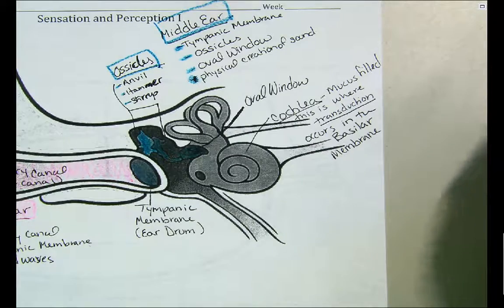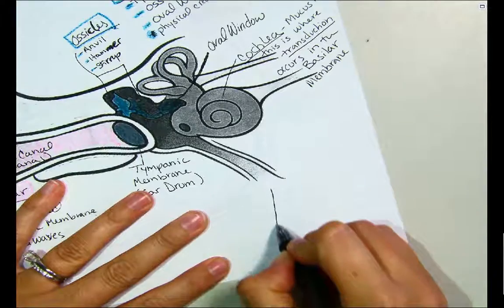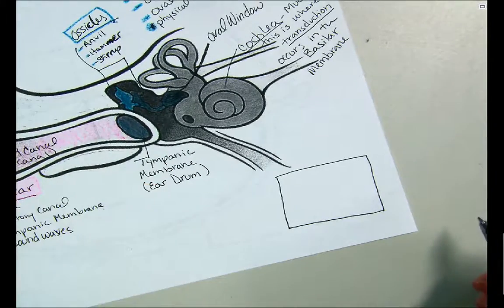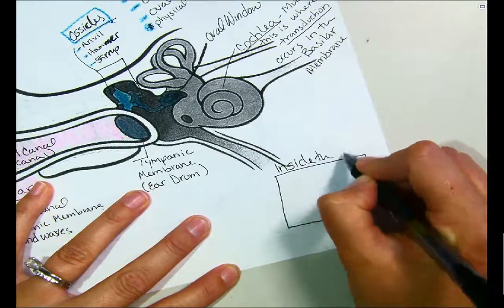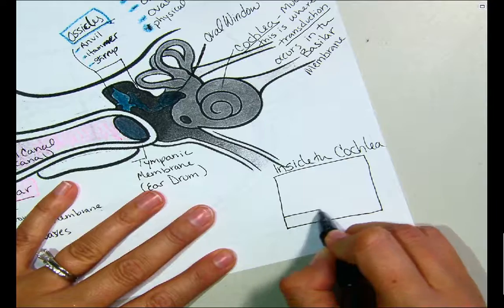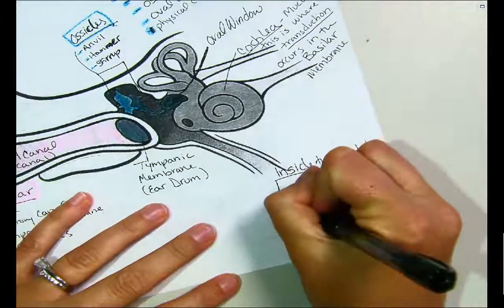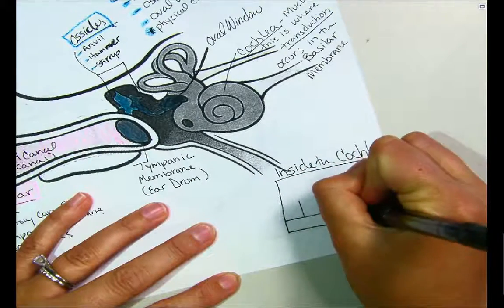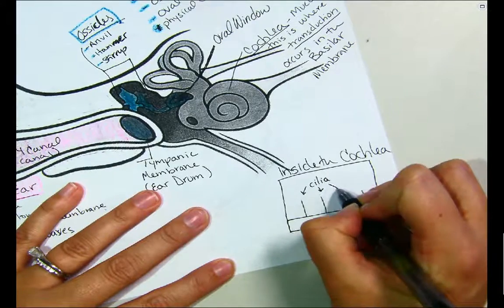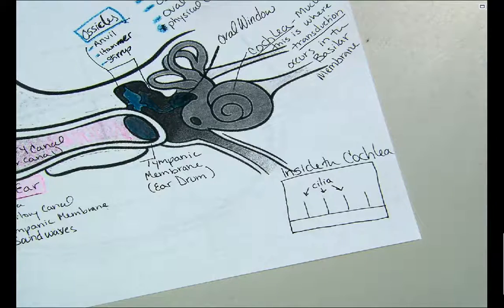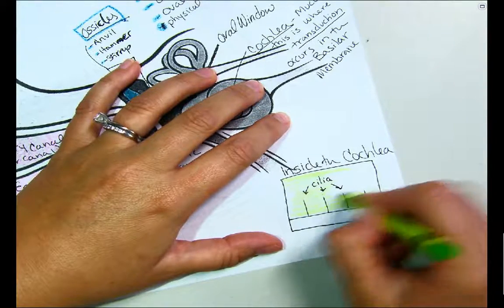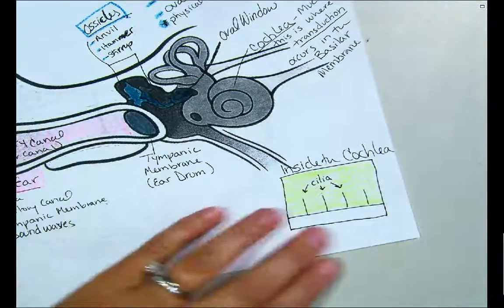Let's talk about inside the cochlea. Draw a little box and label it 'Inside the Cochlea.' Inside the cochlea — this snail-looking thing — you have cilia, which are little hairs, going into the membrane. Around your hair you have mucus — I'll color it green because when I think mucus I think green.